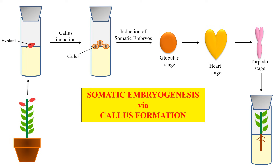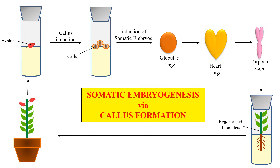As a result, this torpedo stage embryo can be converted into plantlets — which have root and shoot — and from this plantlet we can ultimately get the complete plant. This is the complete procedure of somatic embryogenesis, in which the explant is first changed into callus, induced to form somatic embryo through globular, heart, and torpedo stages, and ultimately the plantlet is produced.